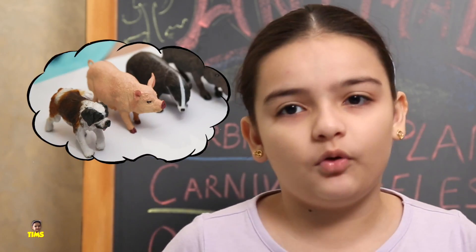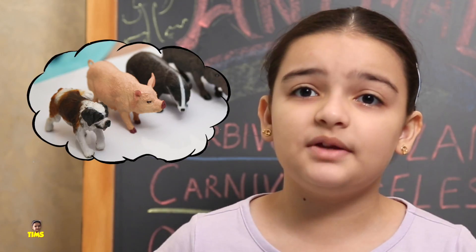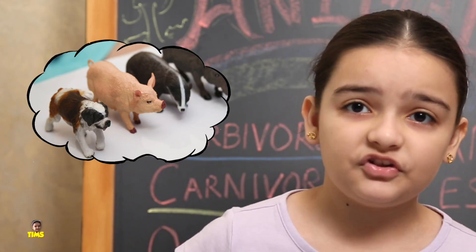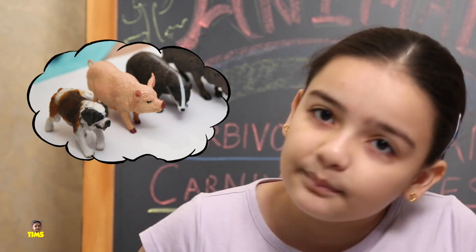Number three: Omnivores. These are animals which eat both flesh of other animals and plants. Now let me show you some examples of these three types of animals.